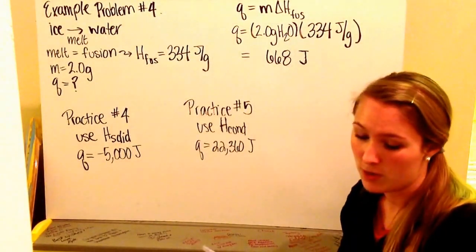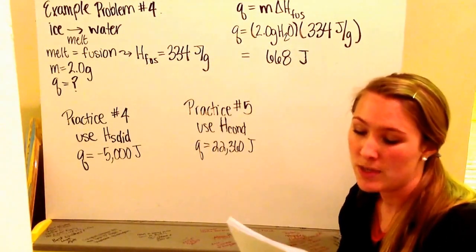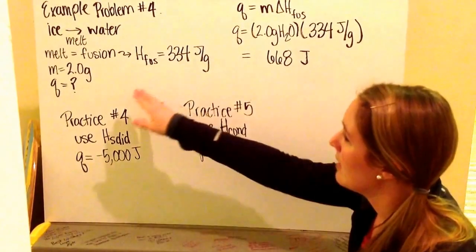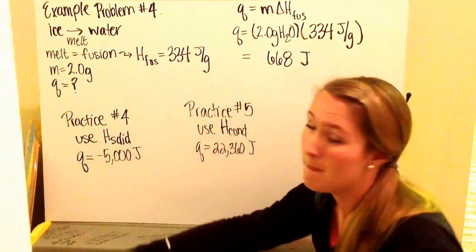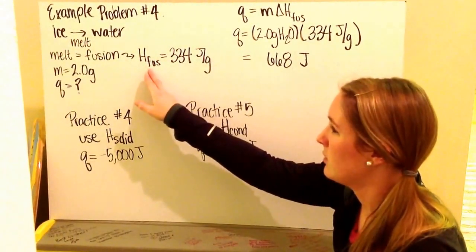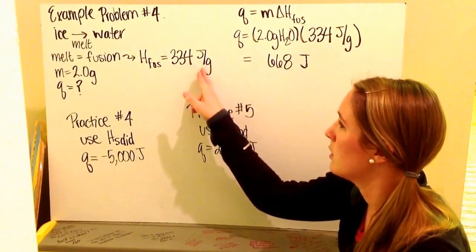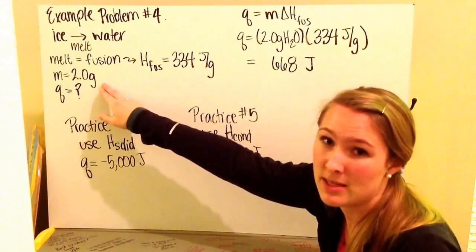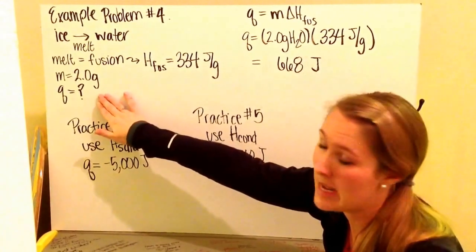Example problem number 4 says if 2 grams of ice melt to liquid, how much energy must have been added to the ice? I'm told that my ice is going from ice to water, it's melting. Melting is the same as fusion. So I use H_F for water, which is 334 joules per gram. I have my mass given to me as 2.0 grams. And I need to locate Q, which is my heat.